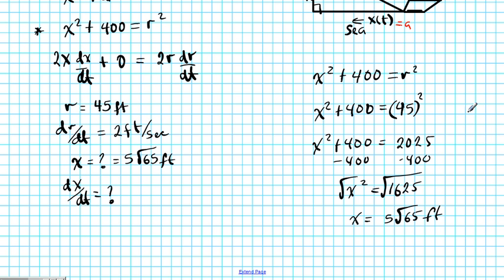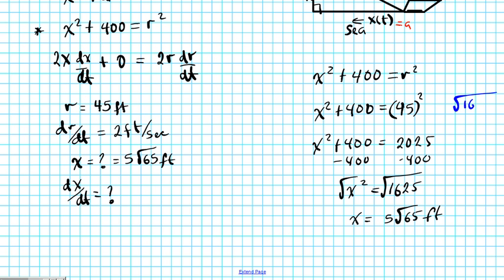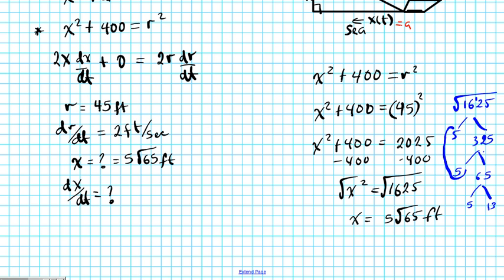Let me show how I got 5√65 so nobody gets confused. I have √1625. Since it ends in 5, I can factor out a 5: 1625 = 5 × 325. Taking another 5 out: 325 = 5 × 65. So 1625 = 25 × 65, meaning √1625 = √(25 × 65) = 5√65. Since 65 = 5 × 13 has no perfect square factors, it stays under the radical. So x = 5√65 feet.